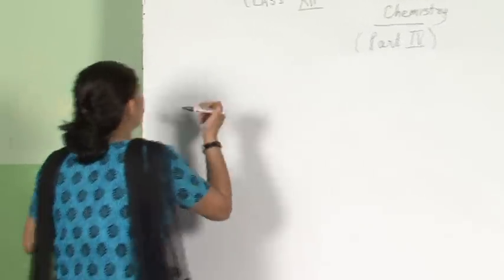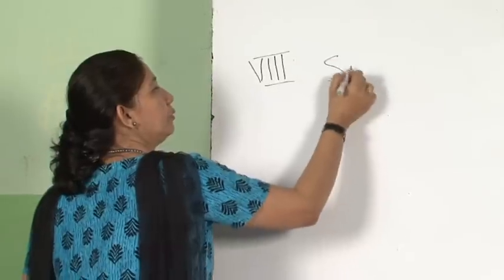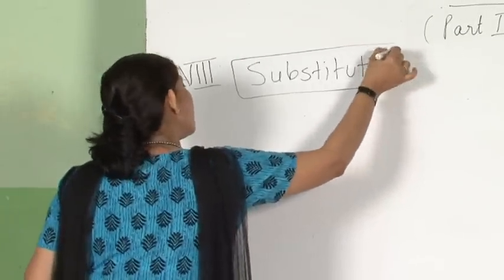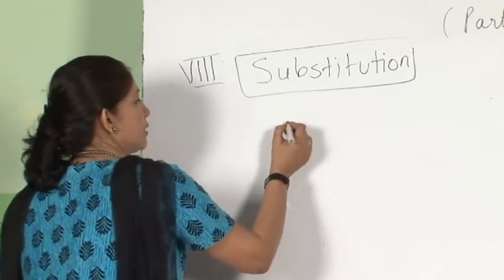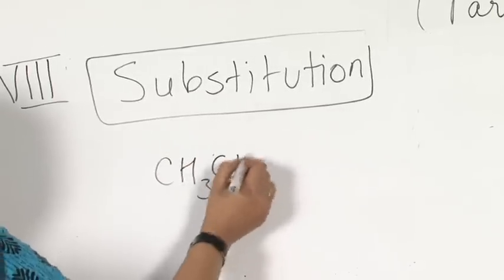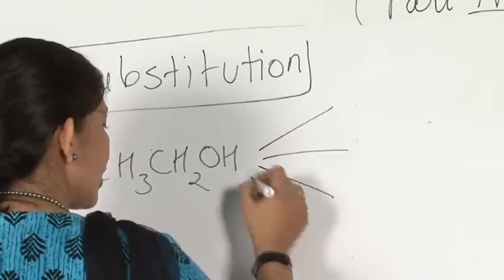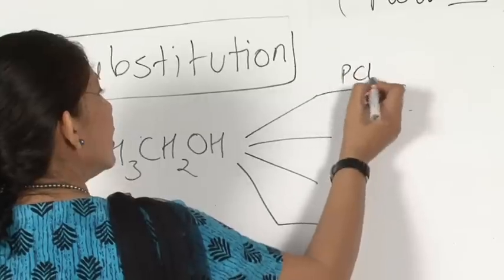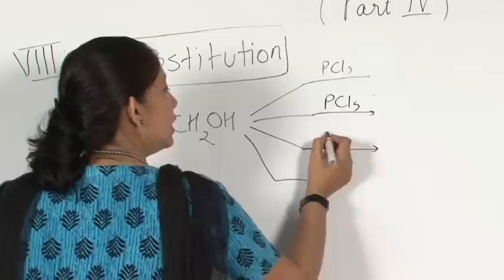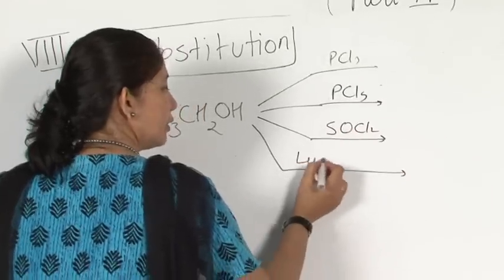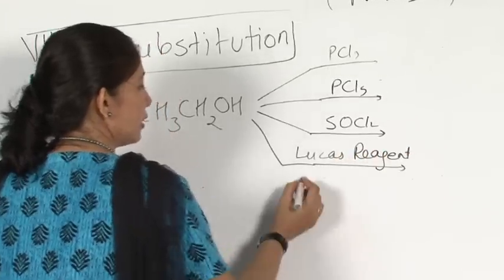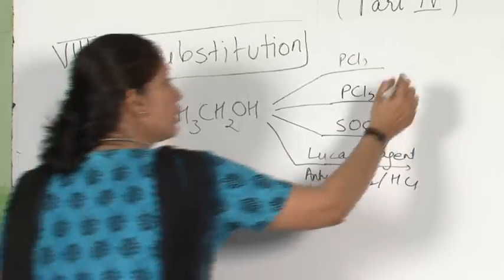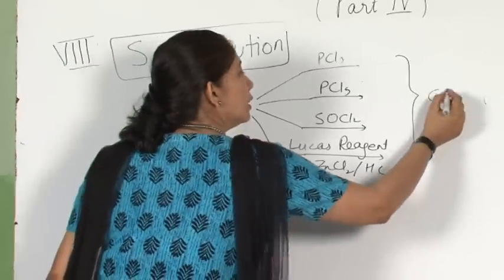After hydrolysis, let me go to another type of reaction — substitution reactions. Many substitution reactions you have already studied in Class 11. If I take an alcohol CH3CH2OH and treat it with PCl3, PCl5, thionyl chloride (SOCl2), or Lucas reagent (anhydrous ZnCl2 and HCl), all these give the alkyl halide — the OH is substituted with chloride.